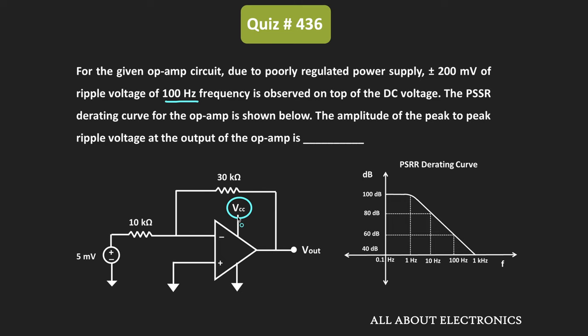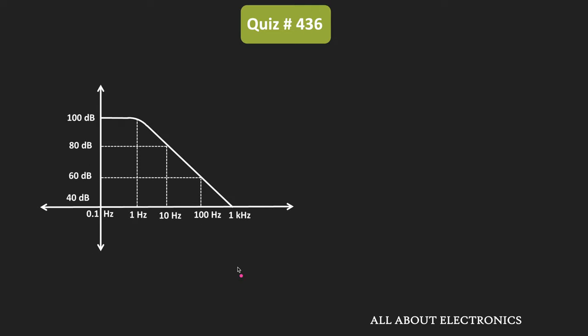From the given data, let us find the amplitude of the peak-to-peak ripple voltage at the output side. To find the value of the PSRR at 100 Hz, we have been given the PSRR derating curve. At 100 Hz, the value of the PSRR is equal to 60 dB.